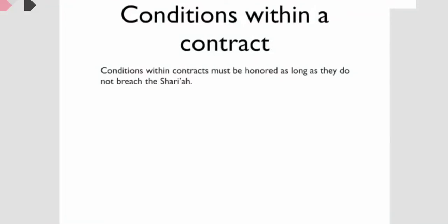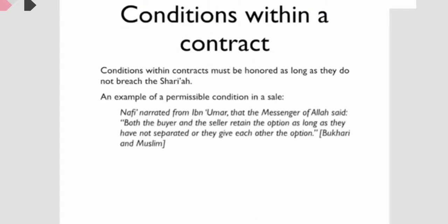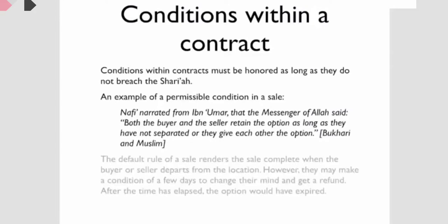What are some of the conditions? First of all, the conditions within the contract must be honored as long as they do not breach the Sharia. An example of these conditions in a sale — it was narrated that the Prophet said both the buyer and the seller retain the option as long as they have not separated, or they give each other the option. So this is talking about the ability to cancel these contracts until they separated or give each other these sorts of options.